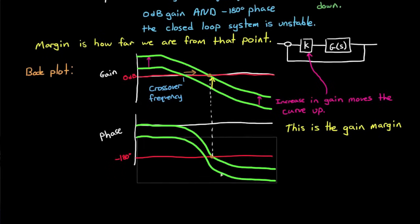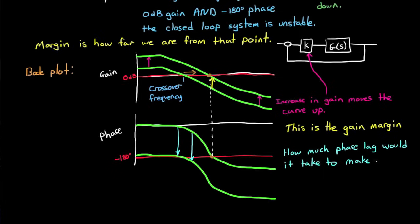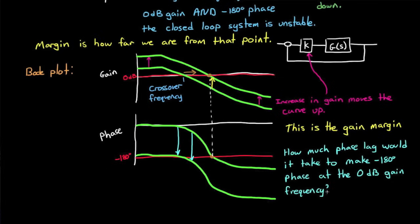Similarly, delay in the system, like the delay in digital computers, only affects the phase and doesn't adjust the gain plot. And you can use a similar technique for the phase margin. At 0 dB gain, how much phase delay would it take to reach minus 180 degrees? And this is the phase margin. In the case that I just drew, it might take 150 degrees more delay before the system went unstable. And you can see it's fairly straightforward to pull them off of a Bode plot.